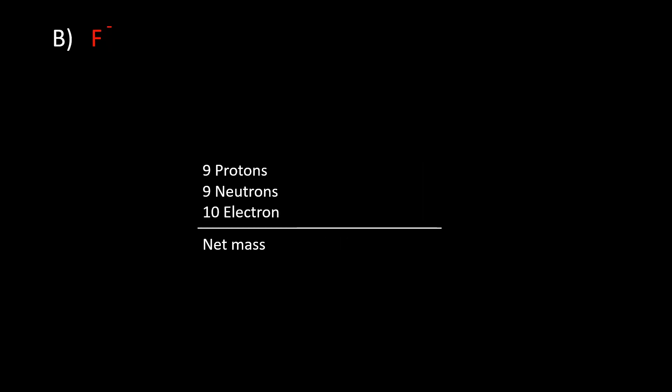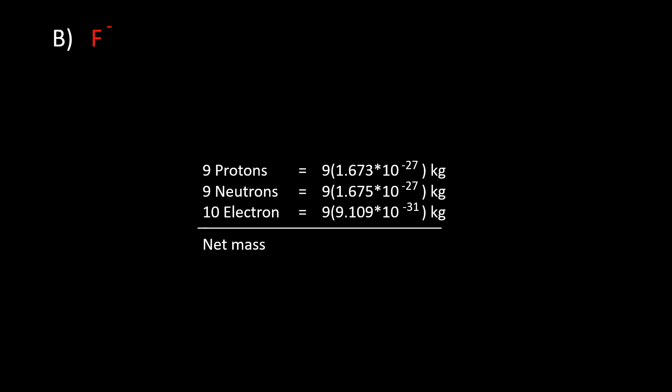For atom B, there are nine protons and ten electrons. By following the same process — multiplying the mass of each particle by its count and then summing them — you get 3.014×10⁻²⁶ kg.